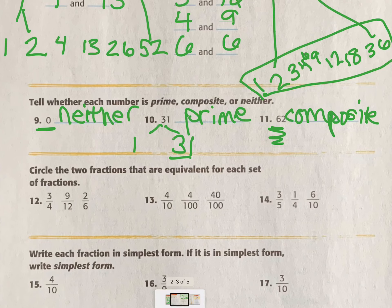All right. Circle the two fractions that are equivalent for each set of fractions. Okay. We got 3/4, 9/12, 2/6. Well, can I get 3 to 9? Yeah, by doing times 3, right? And 4 times 3 is 12. So those are. But I always want to check this one. 2 to 6 is times 3. But can I get from 2 to 9 or 2 to 3? No. So the two equivalent that you should circle are 3/4 and 9/12.